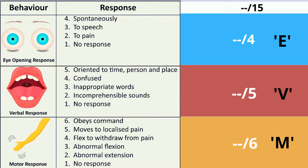The second component is verbal response. If a patient is oriented to person, place, and time, it scores five. If confused — often in cases of short-term dementia or altered mental status — it is four. Inappropriate words with failure to form sentences scores three. Only incomprehensible sounds scores two. No verbal response at all is a score of one. It is assigned by letter V and graded out of five — for example, V1.